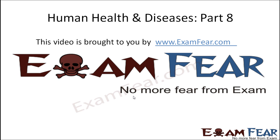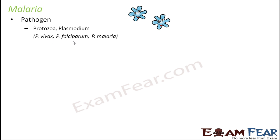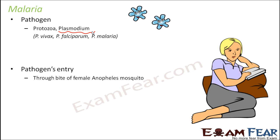This video on human health and diseases part 8 is brought to you by examfear.com. The next disease we will talk about is malaria. The pathogen which causes malaria is a protozoa called plasmodium. There are many different species of plasmodium which cause malaria, like plasmodium vivax, falciparum, and plasmodium malaria. Plasmodium is the causal pathogen for malaria.